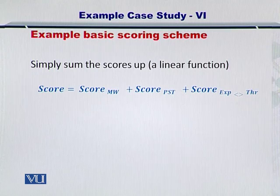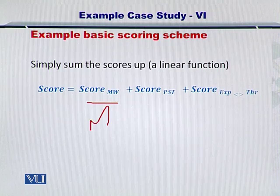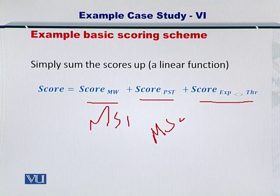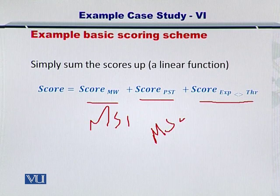So you know that the simple linear scoring scheme that we discussed earlier comprises of the summation of the score obtained from MS1, the PST score obtained from MS2, and the experimental and theoretical spectrum comparison that we did after we finished with the PST. So a simple strategy that we discussed earlier was to just add these scores up and you arrive at a single numerical value that will give you the quality of your candidate protein's match.